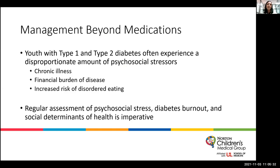The treatment of type 1 diabetes should be focused on treating the person as a whole. We try to approach children with diabetes in a multidisciplinary fashion with the assistance of diabetes educators and licensed clinical social workers. We know that youth with type 1 and type 2 diabetes often experience a disproportionate amount of psychosocial stressors due to their chronic illness and the financial burden of disease. They are at increased risk of disordered eating. Regular assessment of psychosocial stress, diabetes burnout, and social determinants of health is imperative. Early detection of depression, anxiety, eating disorders, and learning disabilities can facilitate effective treatment and help minimize adverse effects on diabetes management.